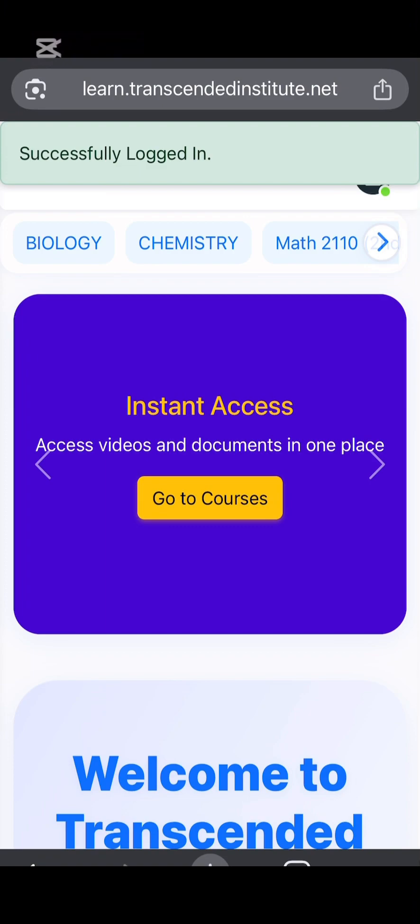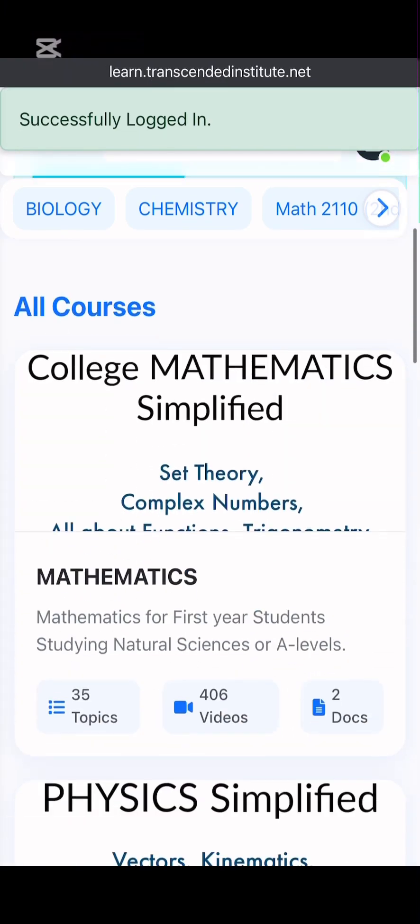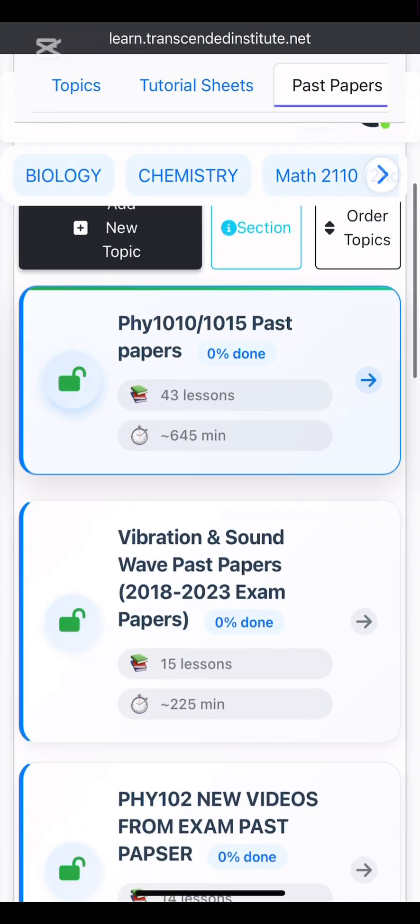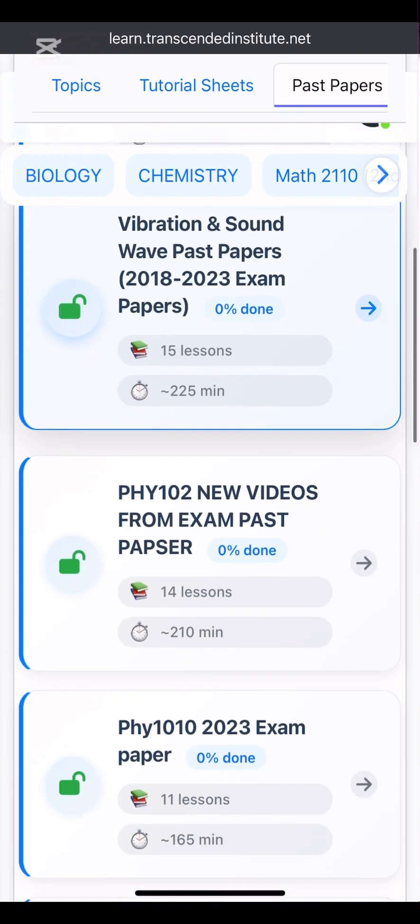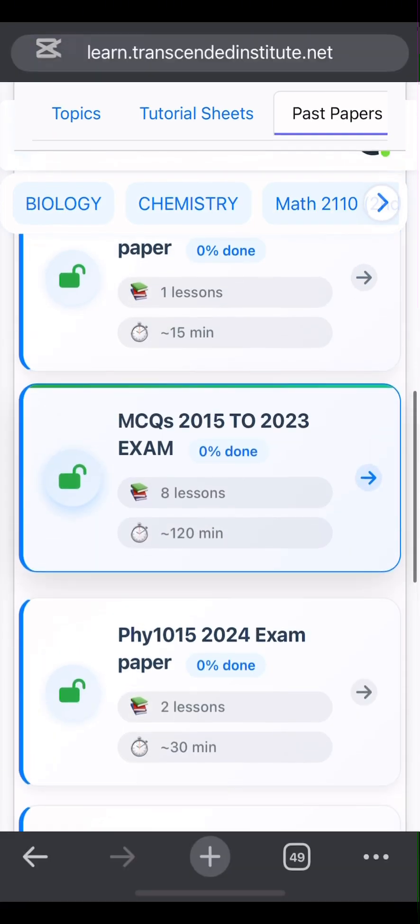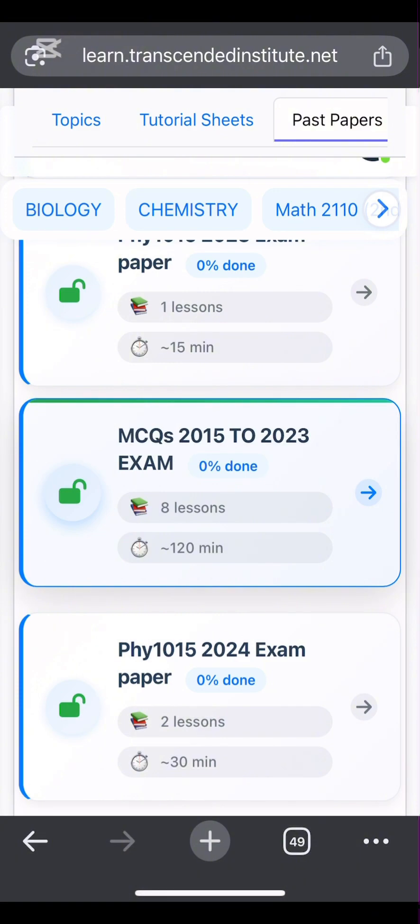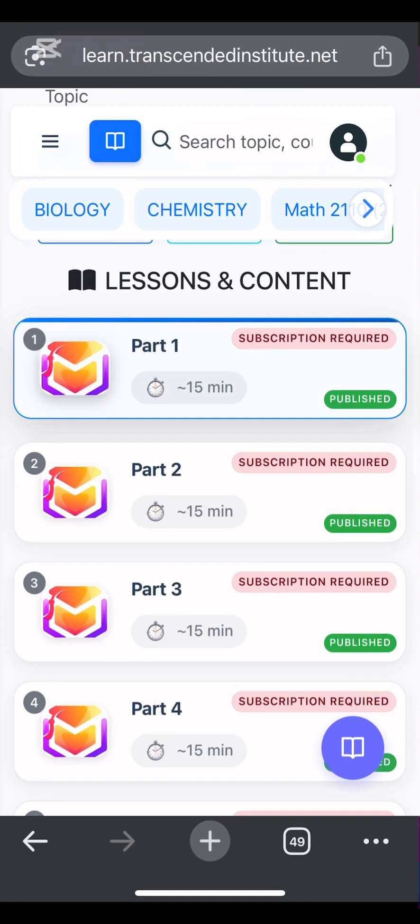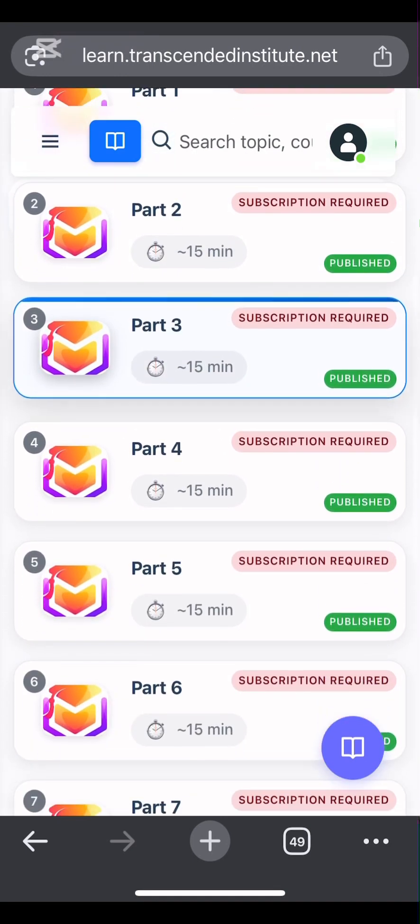Just go directly to physics, the part for past papers, and scroll down. Go on Physics MCQ 2015 to 2023 exams. You will see part one to part eight all listed up in a column form.